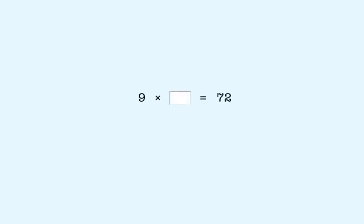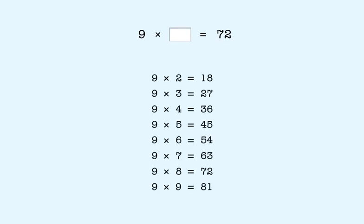In this lesson, you'll learn to find a missing factor when the other factor is 9, which we show like this. We want to answer the question: 9 times what number is 72? There is an easy way to remember the answer to questions like this when multiplying by 9. In an earlier lesson, we showed this table of 9 multiplied by all the digits from 2 through 9.